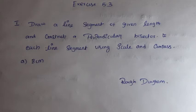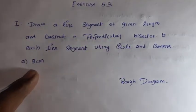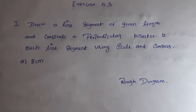Okay, so next Exercise 5.3. First, draw a line segment of a given length and construct a perpendicular bisector to each line segment using scale and compass. Let me draw a perpendicular bisector.